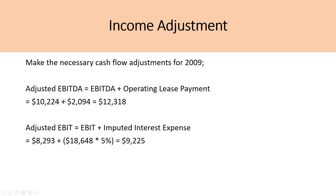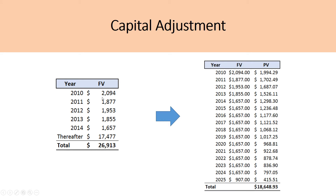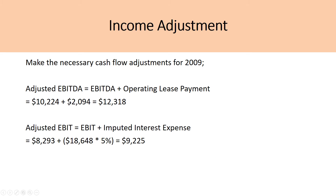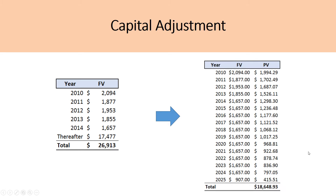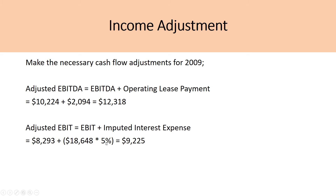Now, what about the income adjustment? CVS Caremark had an EBITDA of about $10,244 million, and the operating lease payment for 2010 was $2,094 million. To adjust EBITDA, we take the reported EBITDA and add back the imputed interest expense: we take the present value of the operating lease and multiply it by the cost of debt — assumed to be 5% — which gives $8,293 million. Adding that back to EBITDA gives us an adjusted EBITDA of $9,225 million.